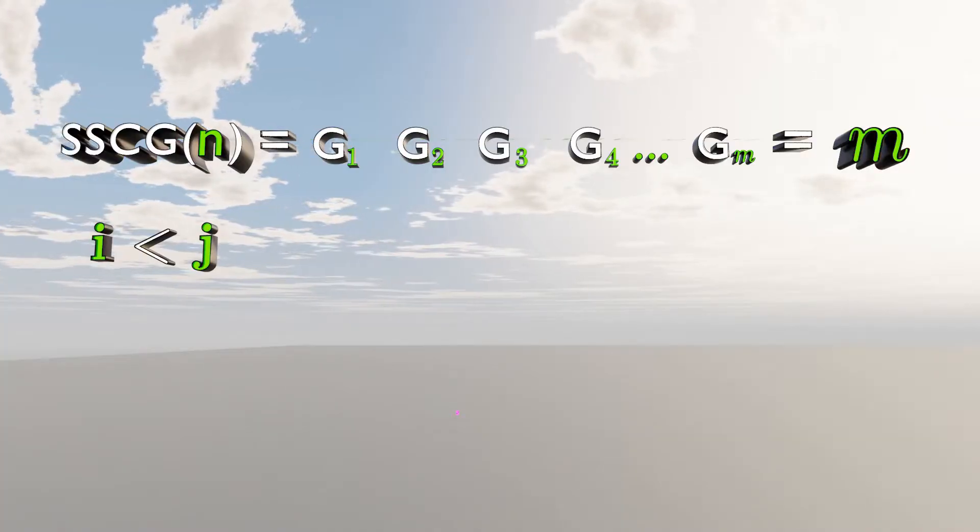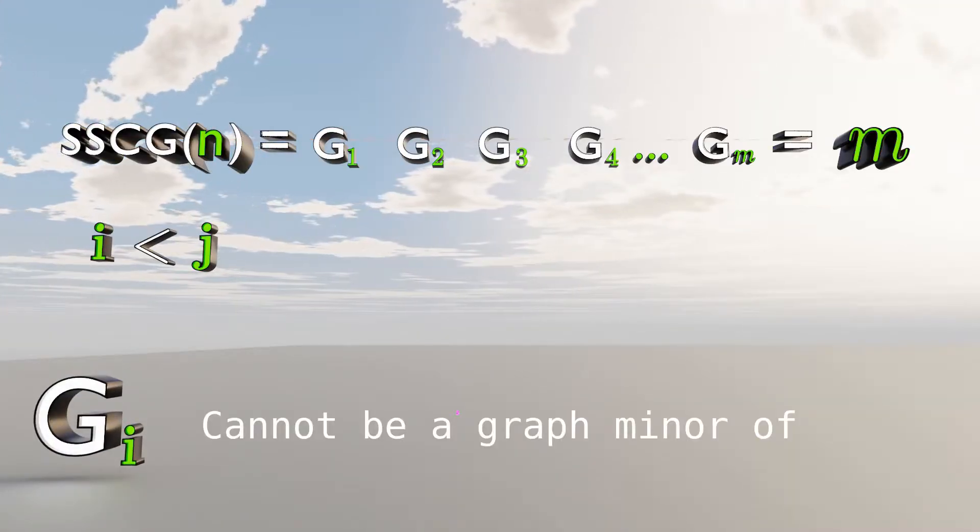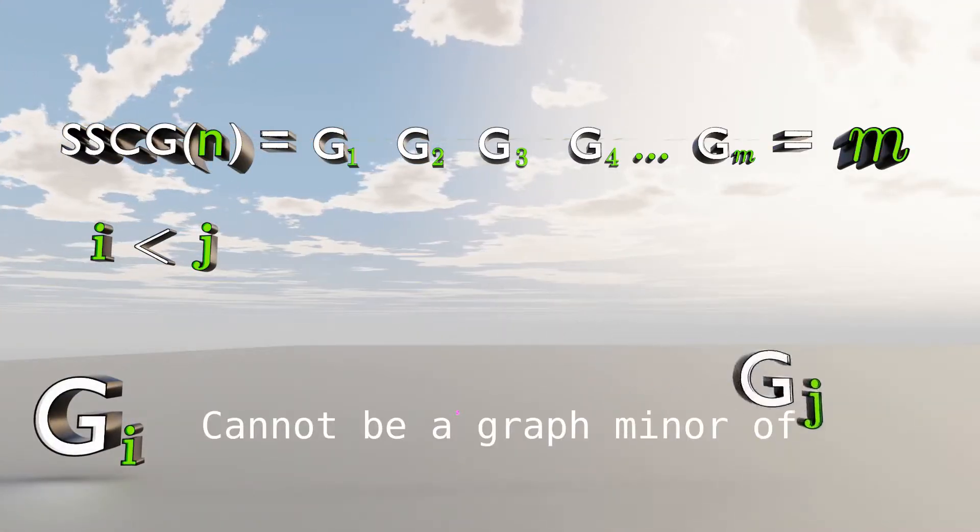If I is less than J, then graph number I cannot be a graph minor of graph number J.